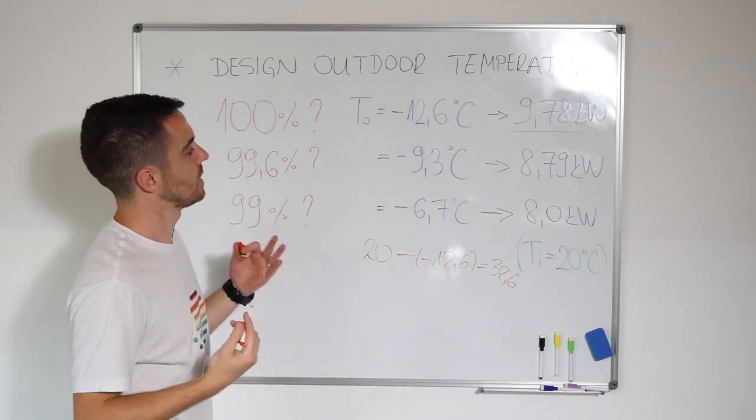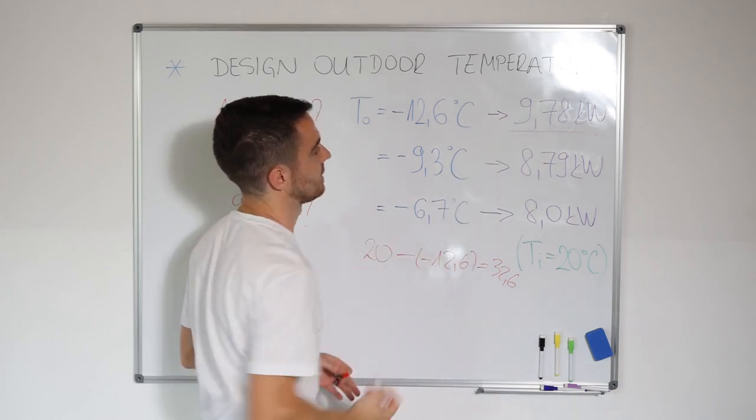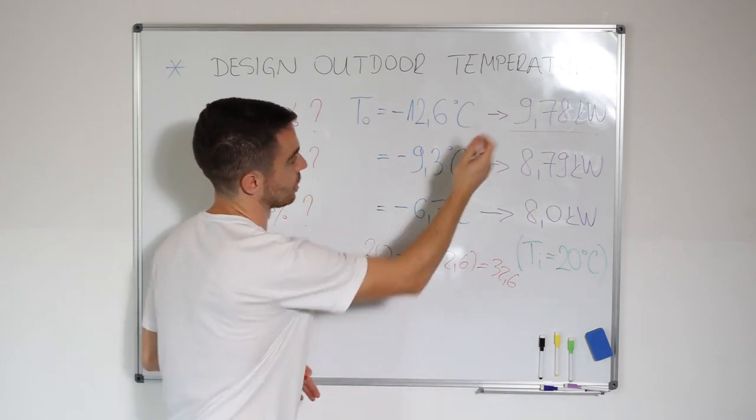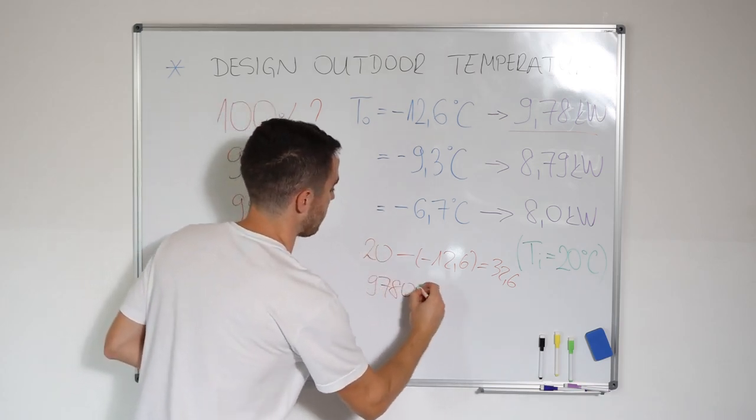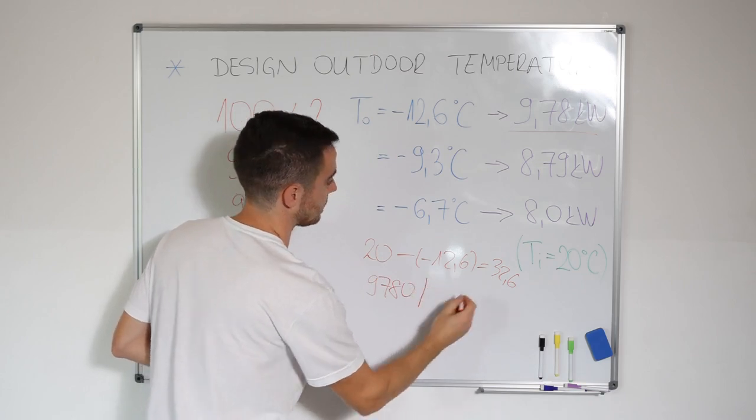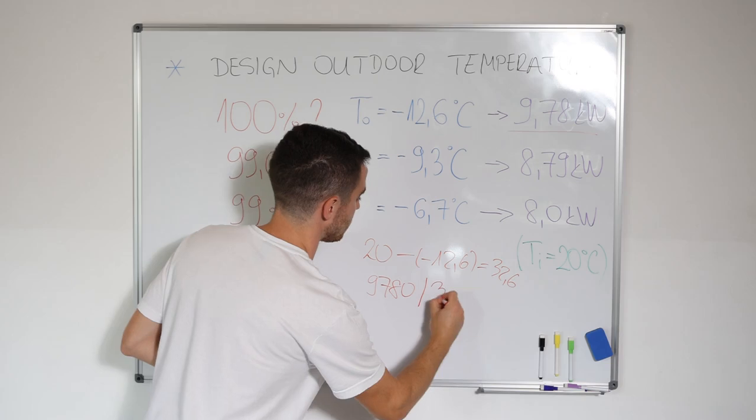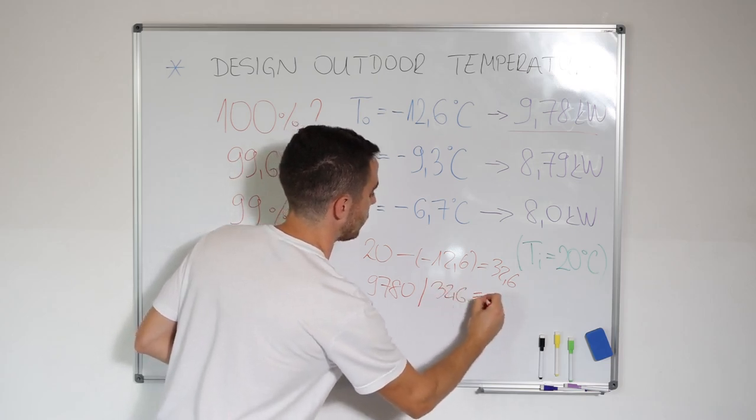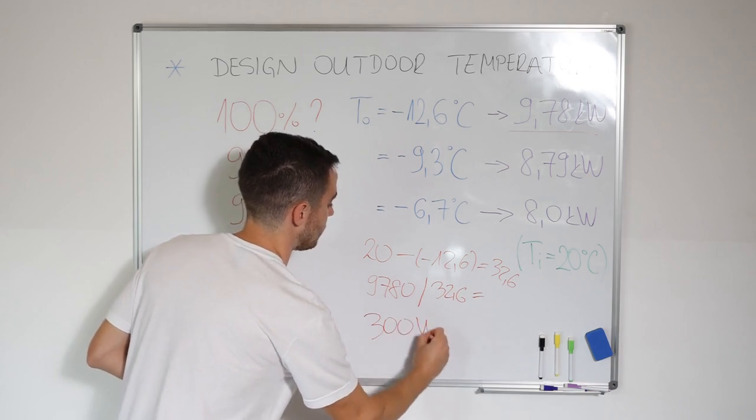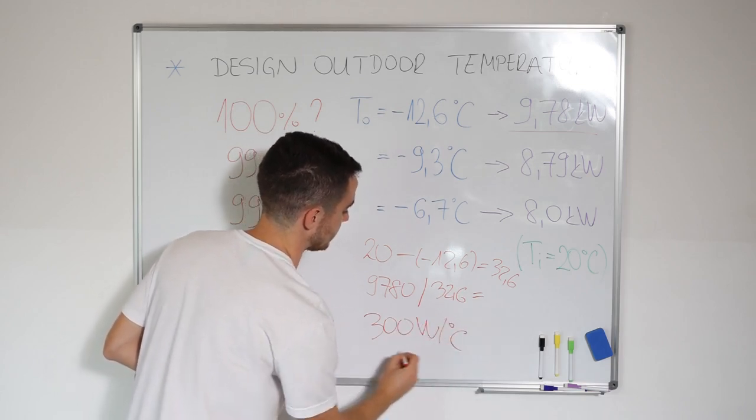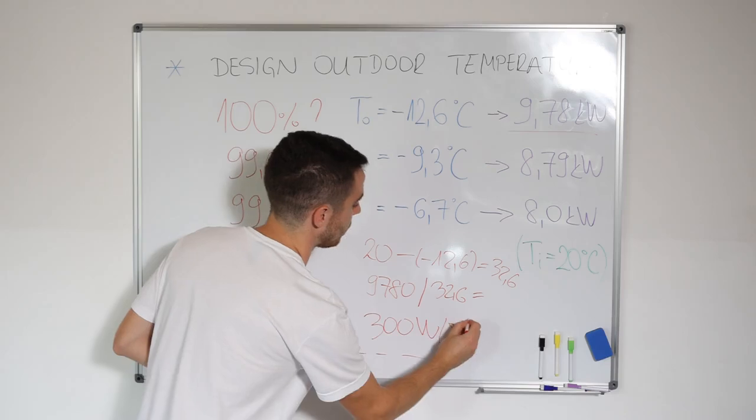And if we divide 9.78 kilowatts, or in watts 9,780, we divide it with temperature difference 32.6, we have a value of 300 watts per 1 degree Celsius.